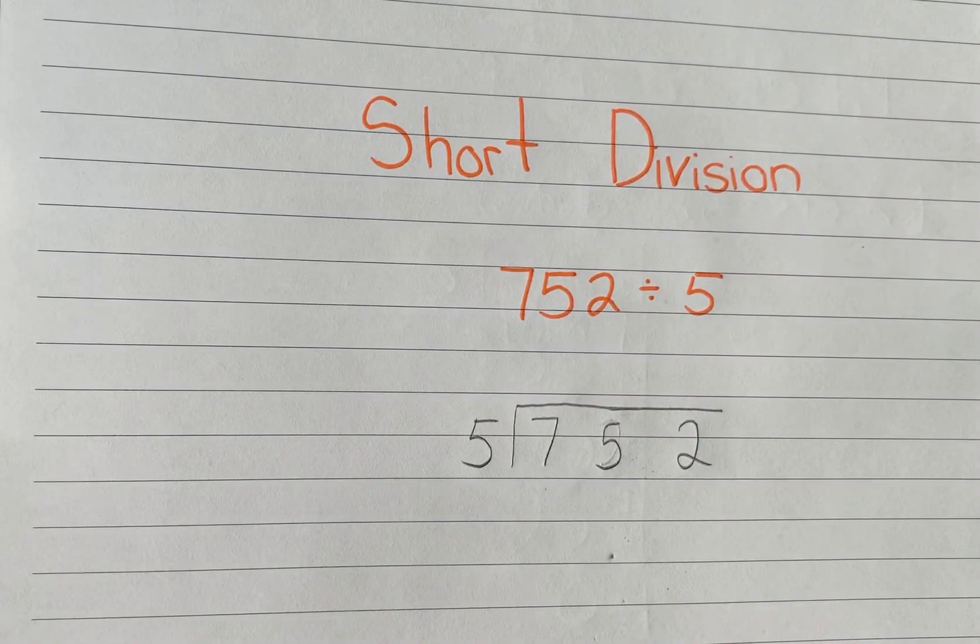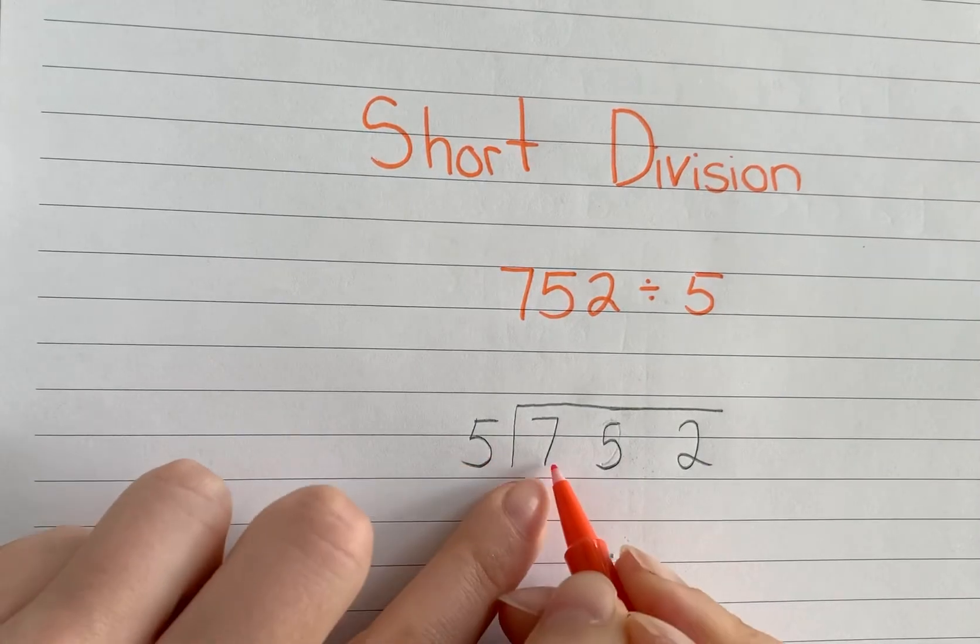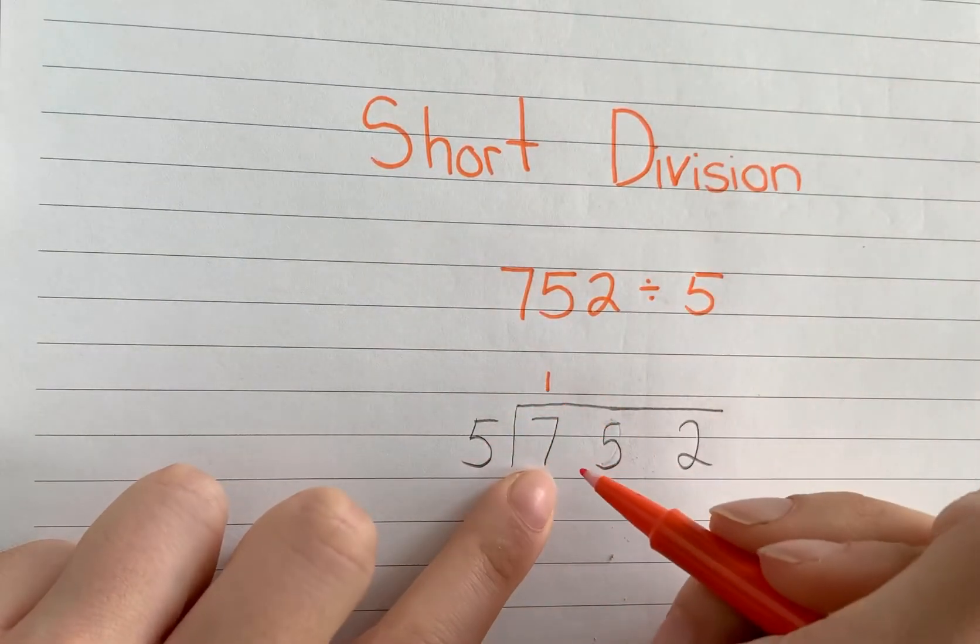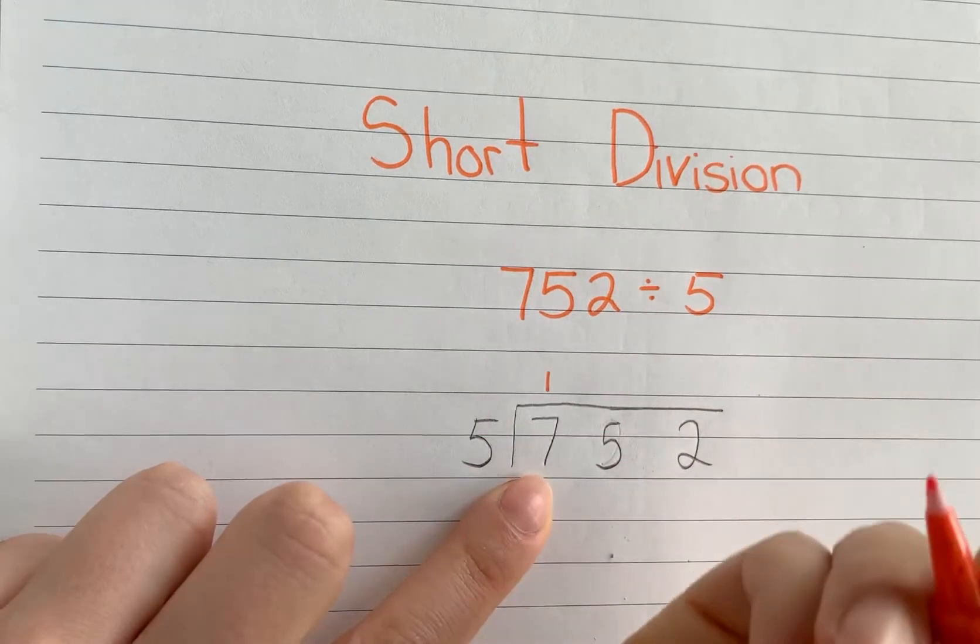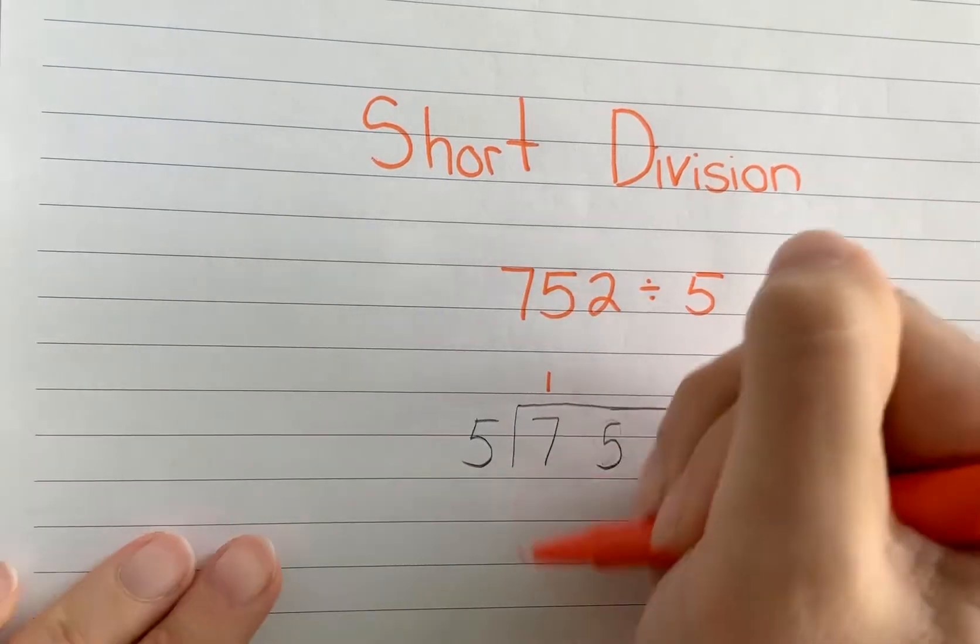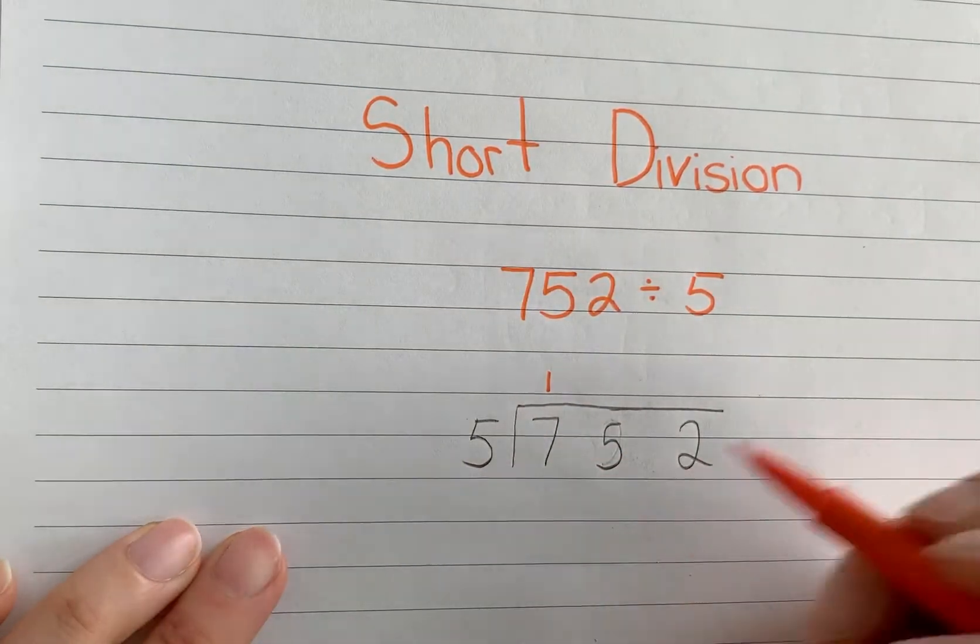Okay, so again, 5 goes into 7 one time. 5 times 1 is 5. How many are left over? 2. Now, here's where it's different. Instead of doing all that work, dropping down, adding, subtracting, the usual.